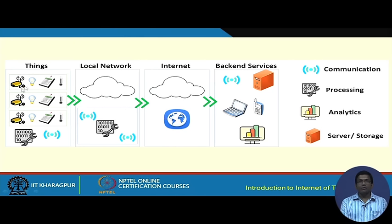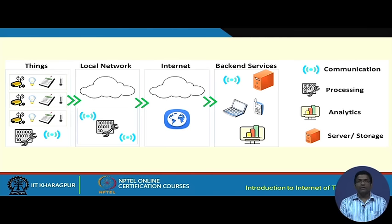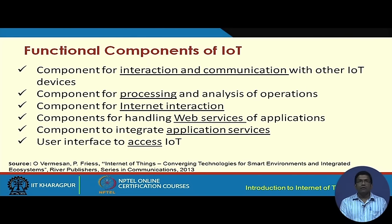Wireless technology helps these different devices talk to one another. Information from these devices flows through a local network and then through the internet to backend services involving different servers and processors for running different analytics. Based on that, different devices can be actuated — for example, a pump might be started for agricultural purposes based on data received from sensor nodes and analytics done at backend servers.